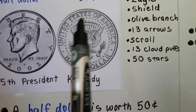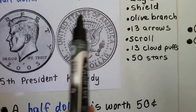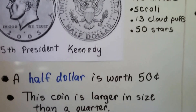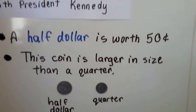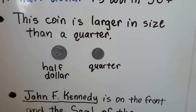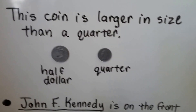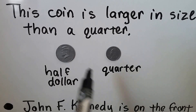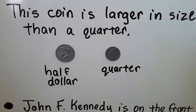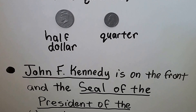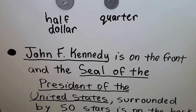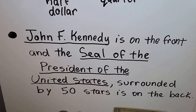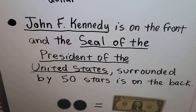He's surrounded by 50 stars. A half dollar is worth 50 cents, and this coin is larger in size than a quarter. Not only is it more money — 50 cents versus a quarter's 25 cents — but it's larger in size too. John F. Kennedy is on the front, and the seal of the President of the United States surrounded by 50 stars is on the back.